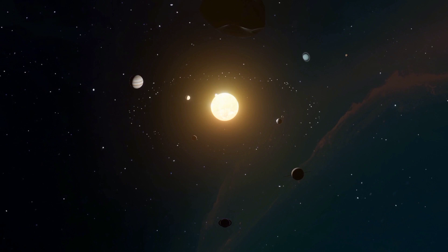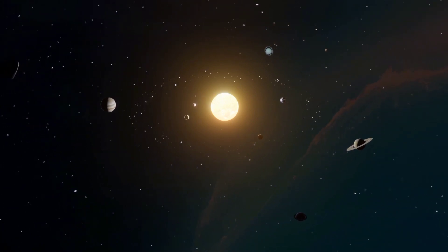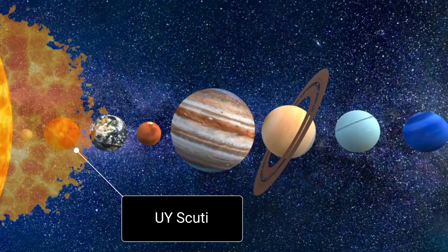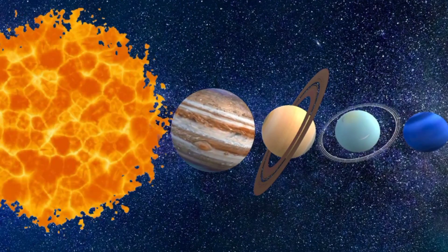Imagine looking up at the night sky. You can see twinkling stars, a glowing moon, and even a shooting star zipping by. But what if one of those stars was so big, so unimaginably vast, that it could swallow up our entire solar system? That, my friends, is UY Scuti.